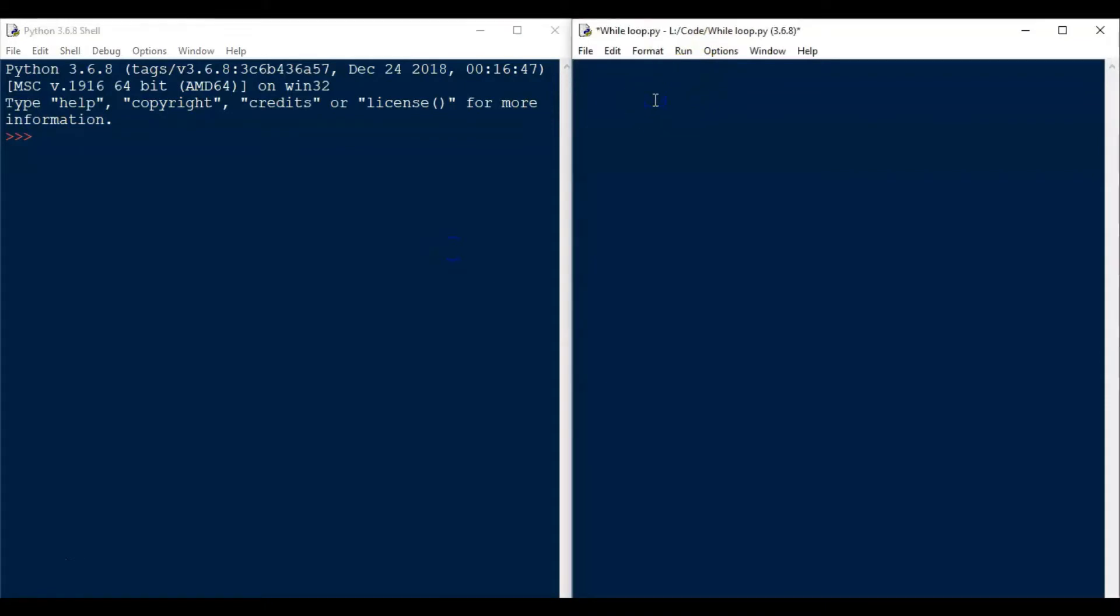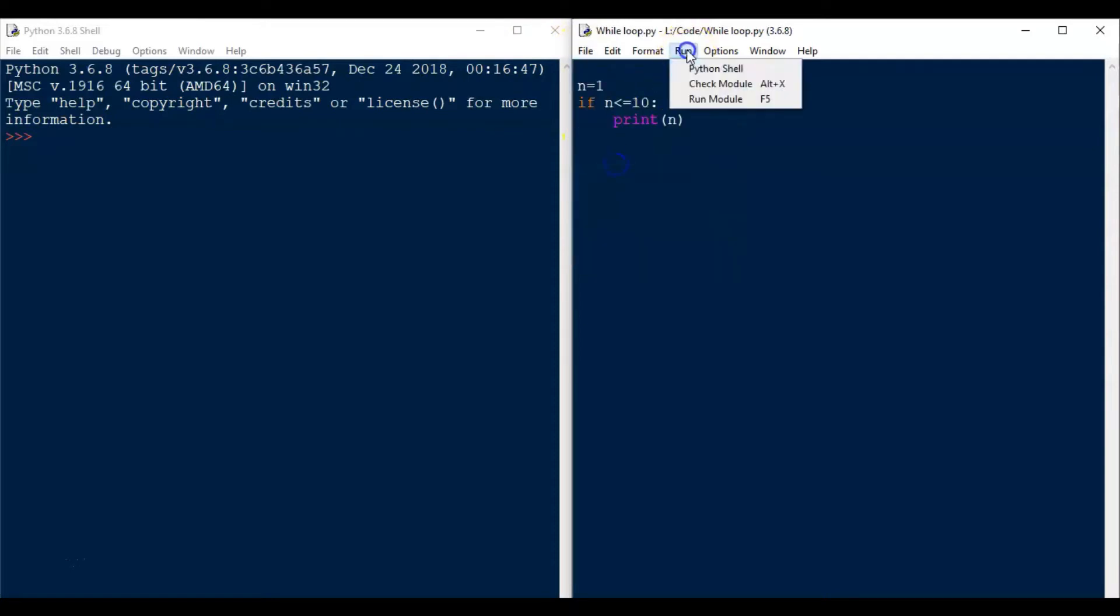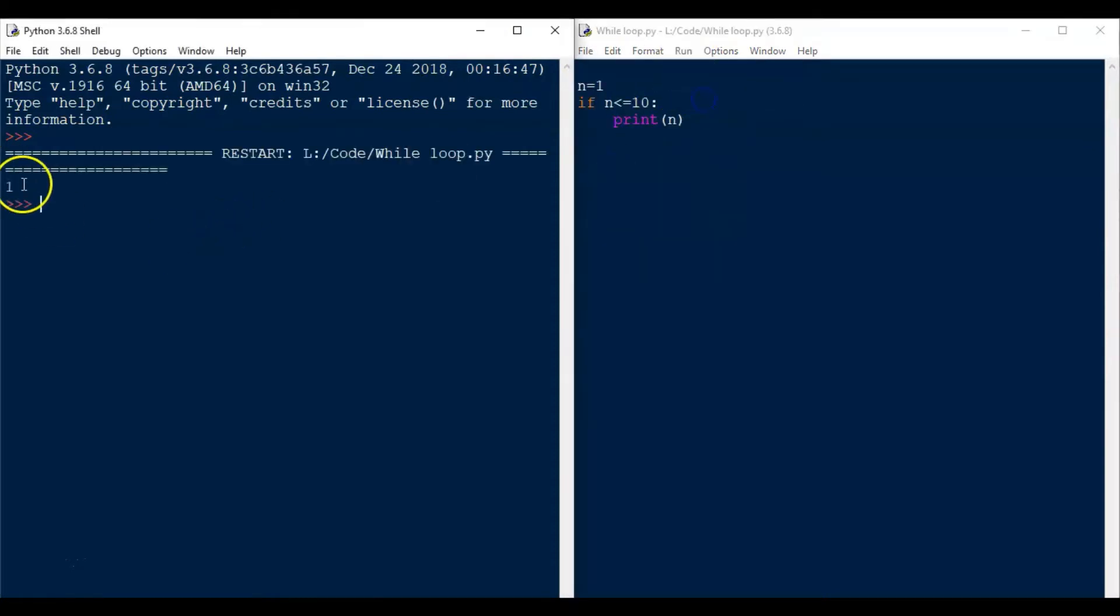I am writing n equal to 1 and if n is less than or equal to 10, I am going to print n. Definitely n is less than 1, I mean less than 10, correct? Now let us save the file and run the code. Python will run the code one time and it will print 1 because n is less than 10 and the condition is true.